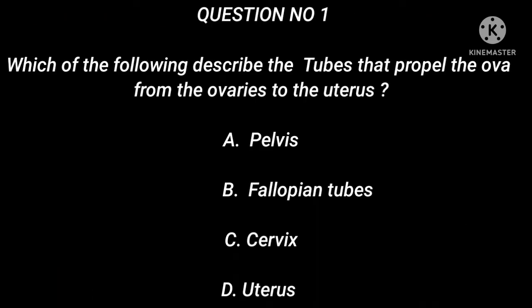Question number 1. Which of the following describes the tubes that propel the ova from the ovaries to the uterus? A. Pelvis. B. Fallopian tubes. C. Cervix. D. Uterus.